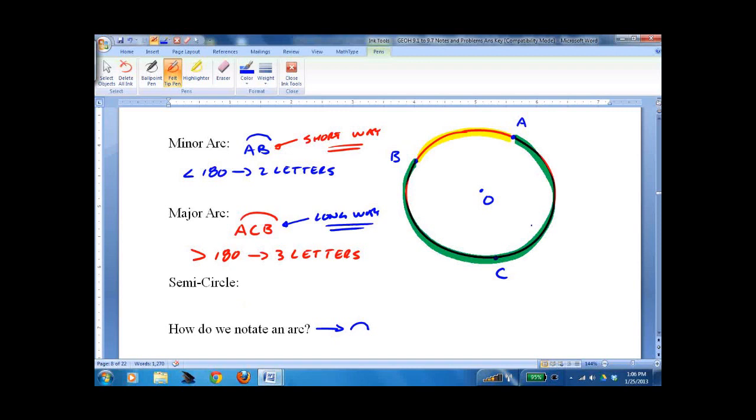Let's add another point, point D over here, and they are on a diameter. So a semicircle is a 180-degree arc. And we just notate it with two letters. Now, since it's 180 degrees, it doesn't really matter which arc we're talking about. They're both 180-degree arcs.